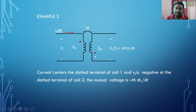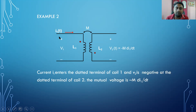In the second example, the current enters at the dotted terminal of the first coil, but the second coil has the current leaving at the dotted terminal. So I have to write the negative sign — the opposite sign — that is, −M di1/dt.